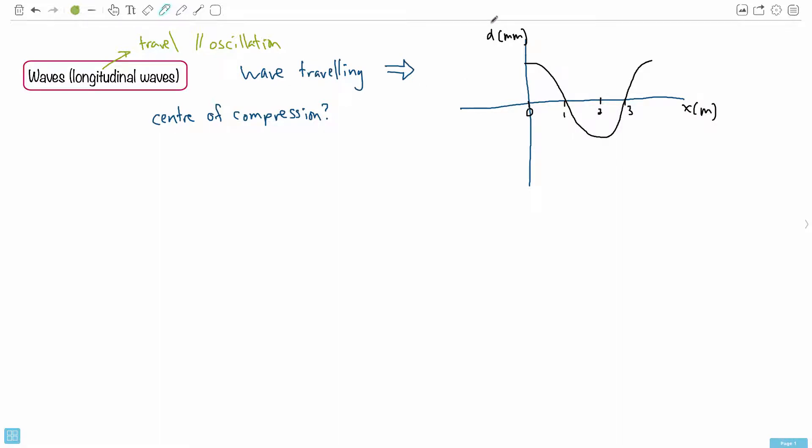We're told that this right here, this D, that's the displacement from equilibrium, and we're told that X, that's just a position along this particle or this medium.